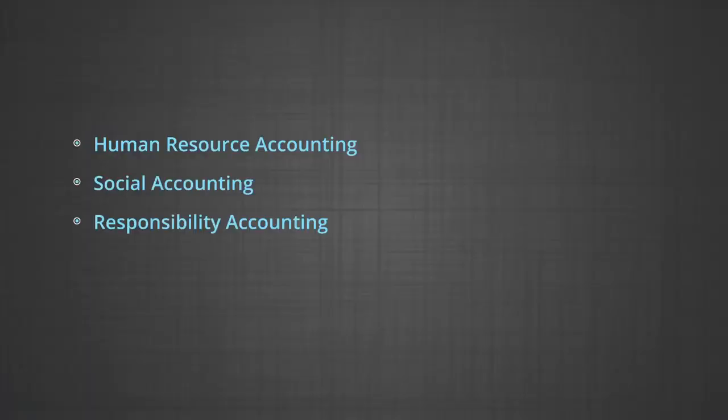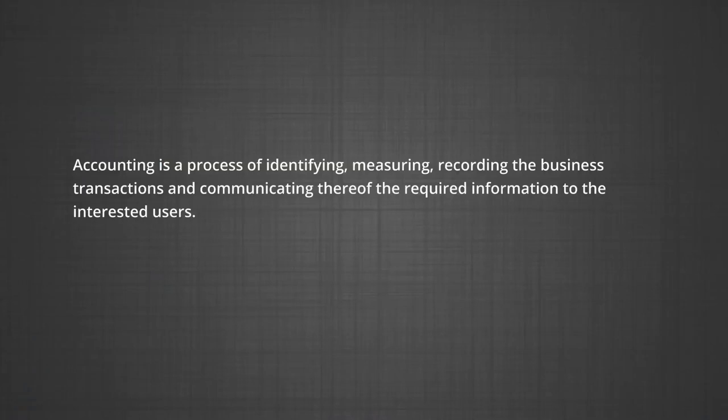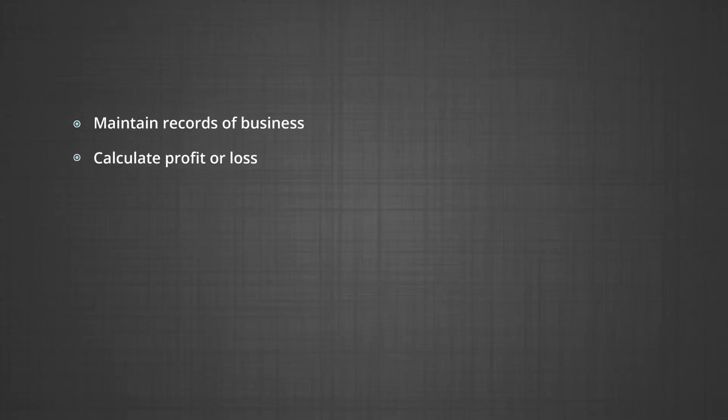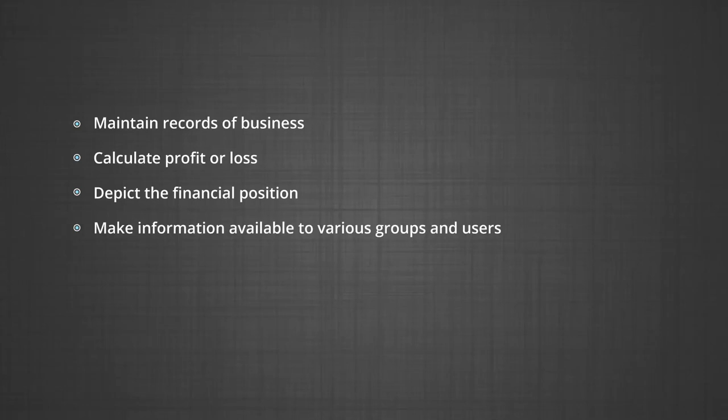As a result, the scope of accounting has become so vast that new areas like human resource accounting, social accounting, and responsibility accounting have also gained prominence. Now, let us summarize what we have discussed in this module. First, the meaning of accounting: accounting is the process of identifying, measuring and recording business transactions, and communicating the required information to interested users. Next, we discussed the objectives of accounting — the primary objectives are to maintain records of business, calculate profit or loss, depict the financial position, and make information available to various groups and users.